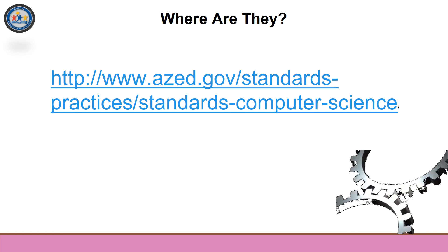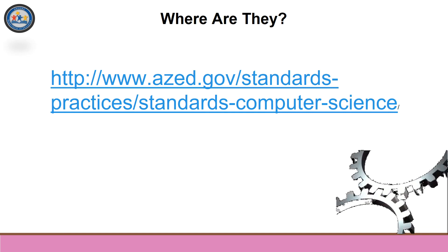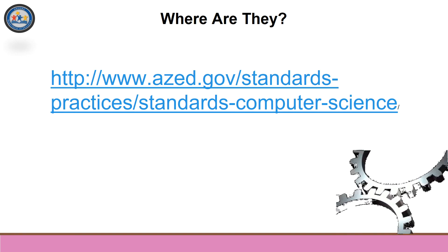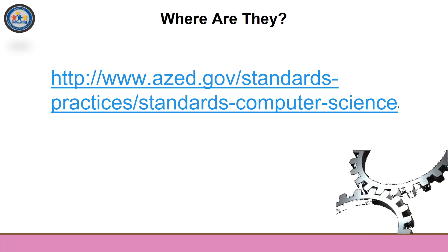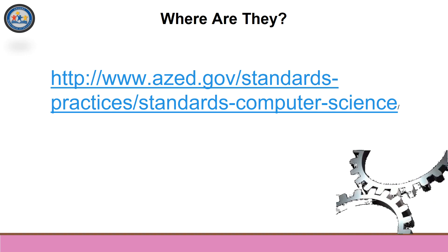So where are they? The approved Arizona computer science standards are available for download at the address shown on your screen. There's also a download link on the same page for the standards broken out by essential concept instead of by grade, to more easily show progression through grade level.